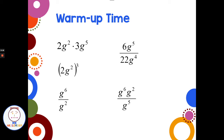Welcome back. On the first one, we have 2g squared times 3g to the fifth. The 2 and 3 are not the same base, so we multiply 2 times 3 and get 6. And g squared times g to the fifth — we're multiplying and have the same base, so we add the exponents and get 6g to the seventh.